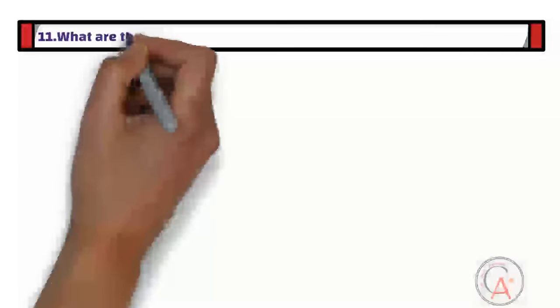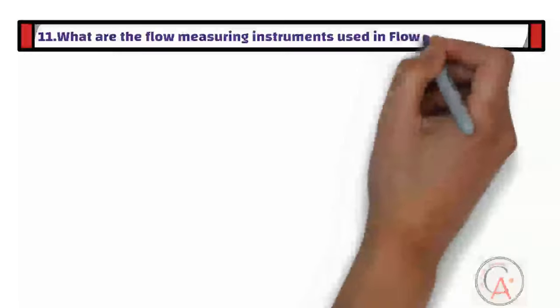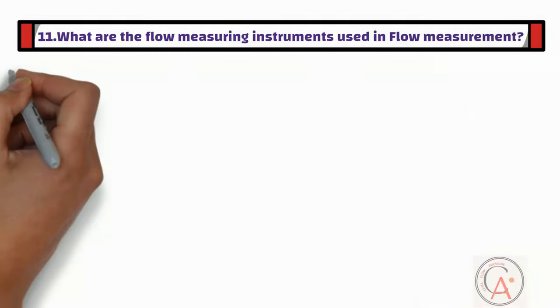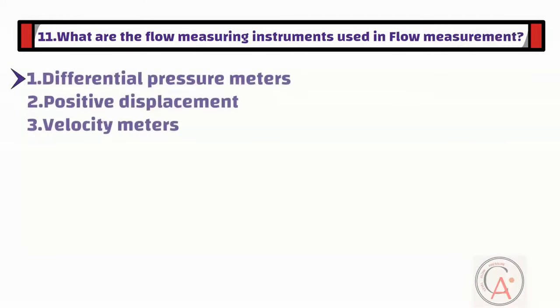The eleventh question is: what are the flow measuring instruments used in flow measurement? There are different types of flow measuring instruments such as differential pressure meters, positive displacement meters, velocity meters, thermal mass flow meters, and Coriolis mass flow meters.